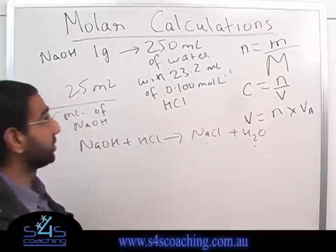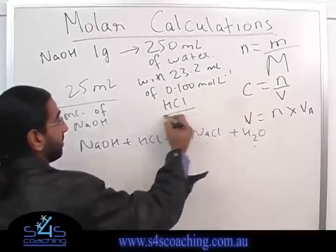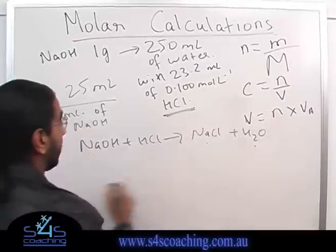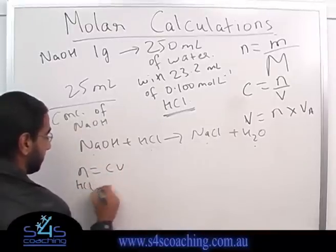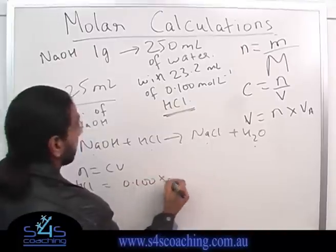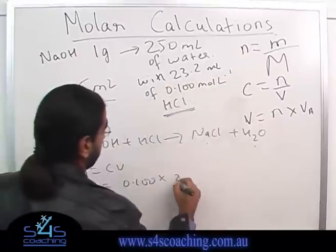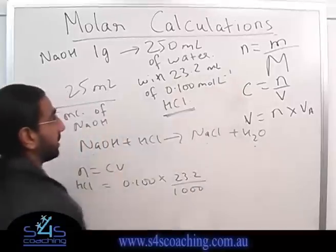What do I need to do? I need to convert what I have to moles. So what do I have? I have HCl, right? I can find n equals Cv. So moles of HCl equals the concentration, which is 0.100, times the volume, which is 23.2, divided by 1000, because I have to convert that to liters.